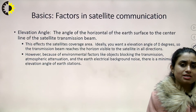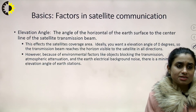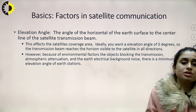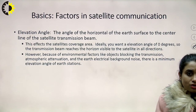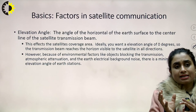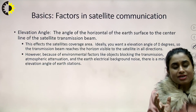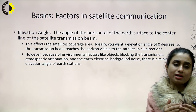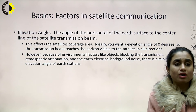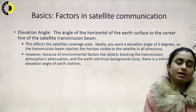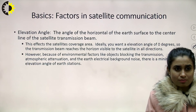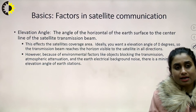There are basic factors involved in satellite communication systems: elevation angle, which is the angle from the horizontal of the Earth's surface to the center line of the satellite transmission beam. Elevation and azimuthal angles are the two angles that must be taken into consideration whenever we are launching a satellite or exploiting it for a particular application.